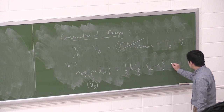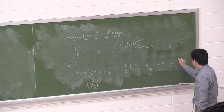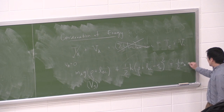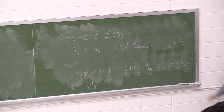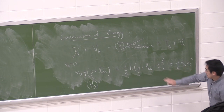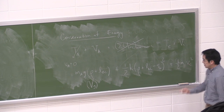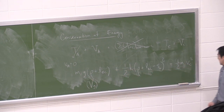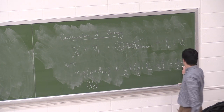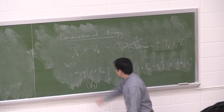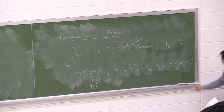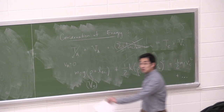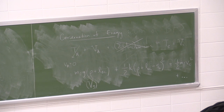Setting this equal to TC plus VC. TC is (1/2)MVC squared. And then I'll continue with VC over on the other board.